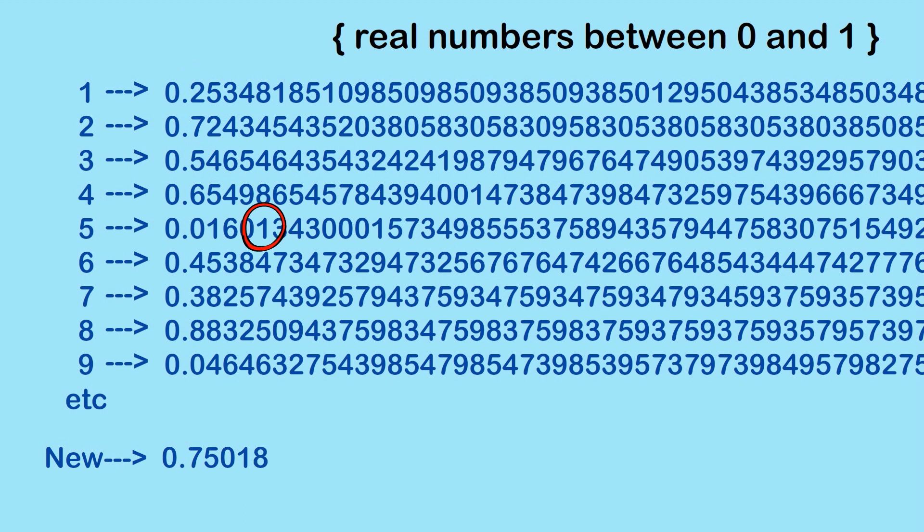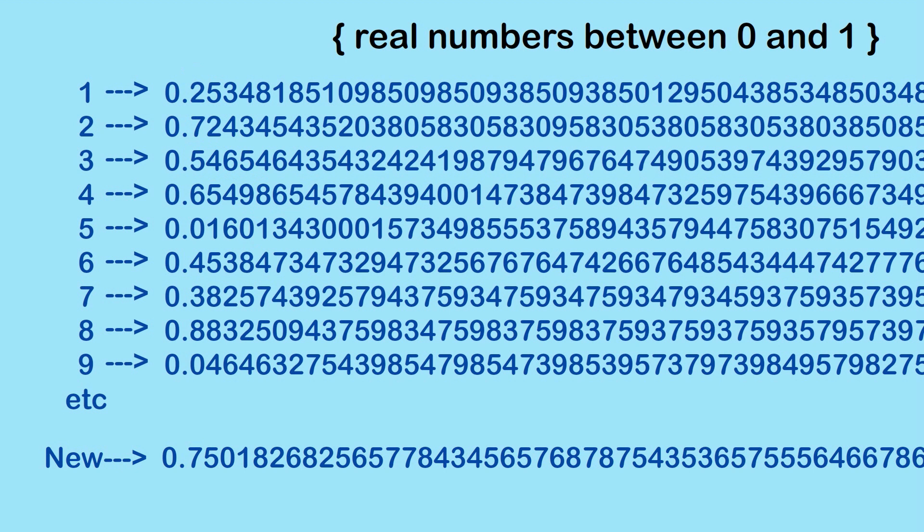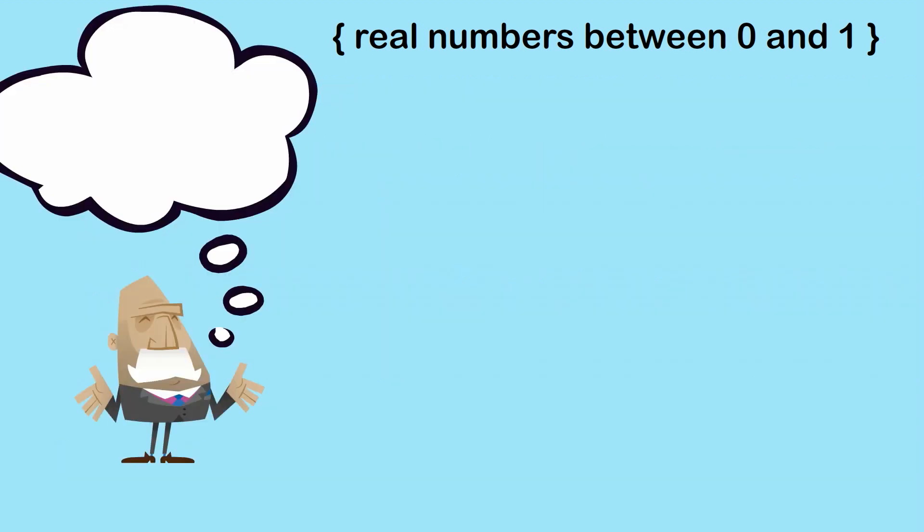And the fact is this number is not anywhere in this list because it's different to every number in the list because we've changed everyone's, everyone's, it's different from every number by at least one decimal place, decimal number somewhere. So this new number is not in the list. So we can only conclude because of this fatal flaw that the set of real numbers between zero and one is not countably infinite. And so we call that uncountably infinite.